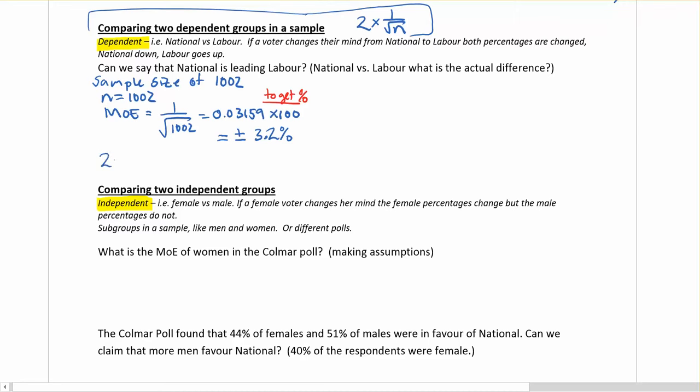Now to use our rule, this 2 times the MOE, or if you want to think about it as 2 times 1 over the square root of n, which is what we've just done, we need to go 2 times 3.2%, and that's going to get us plus or minus 6.4%. We know our confidence interval for making the comparison between these two groups is going to be 6.4%.